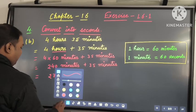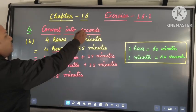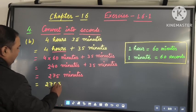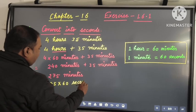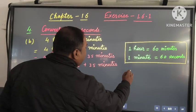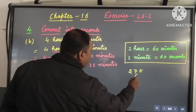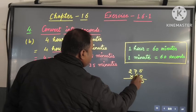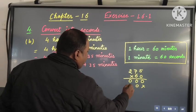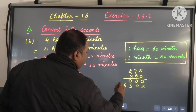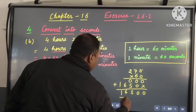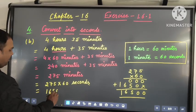So we will convert 275 minutes into seconds. 1 minute is equal to 60 seconds, so we will multiply 275 by 60 seconds. Multiplying 275 by 60: working through the calculation, when you add up you will have 16,500 seconds.